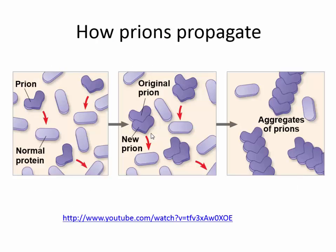How do prions propagate? A prion — a misfolded protein — encounters a normal protein. The prion causes the normal protein to adopt the prion conformation, and then you get aggregates of these misfolded prion proteins — and that is how prions propagate.